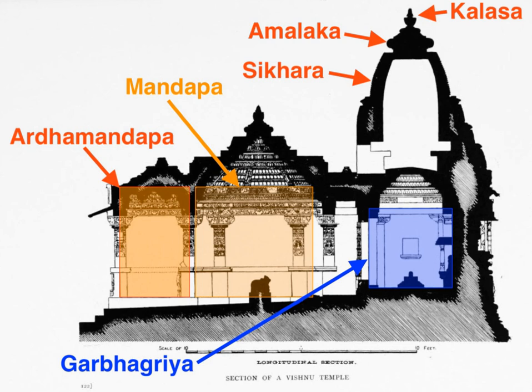The pillars, walls and ceilings typically also have highly ornate carvings or images of the four just and necessary pursuits of life: Kama, Artha, Dharma and Moksha. This walk around is called Pradakshina. Large temples also have pillared halls called Mandapa. One on the east side serves as the waiting room for pilgrims and devotees. The Mandapa may be a separate structure in older temples, but in newer temples this space is integrated into the temple superstructure. Mega-temple sites have a main temple surrounded by smaller temples and shrines, but these are still arranged by principles of symmetry, grids and mathematical precision. An important principle found in the layout of Hindu temples is mirroring and repeating fractal-like design structure, each unique yet also repeating the central common principle, one which Susan Lewandowski refers to as an organism of repeating cells.